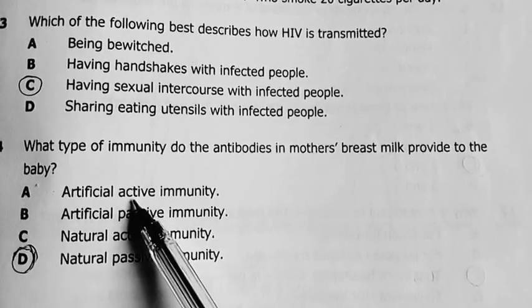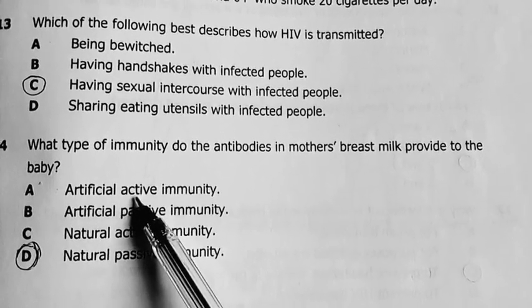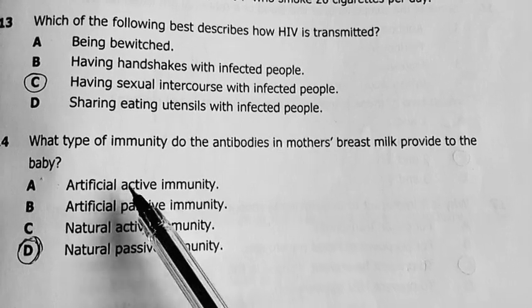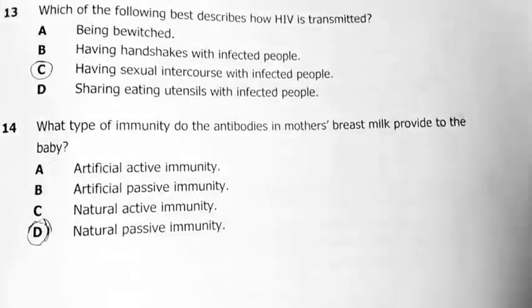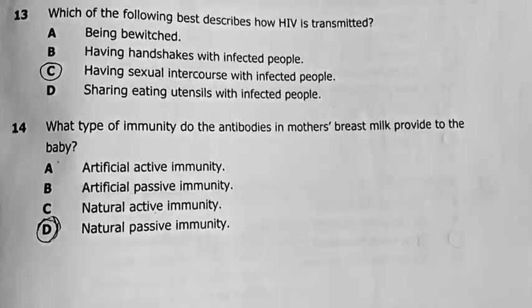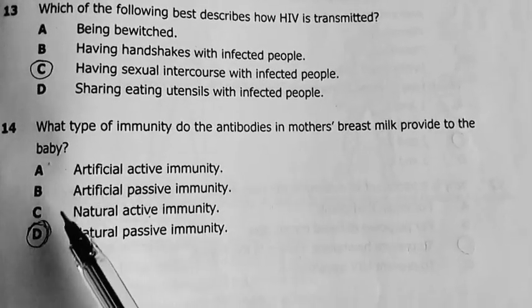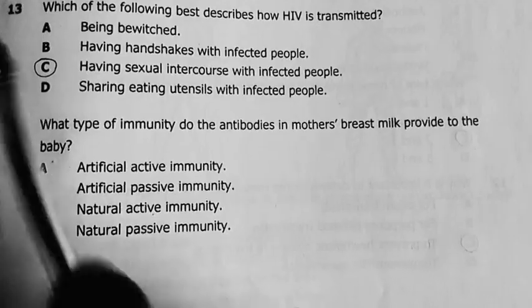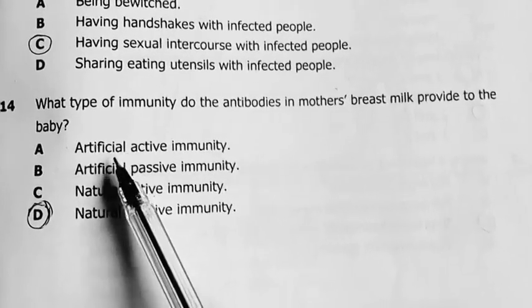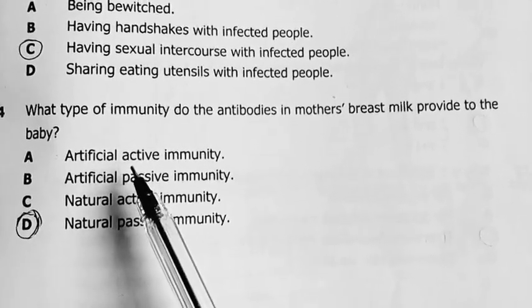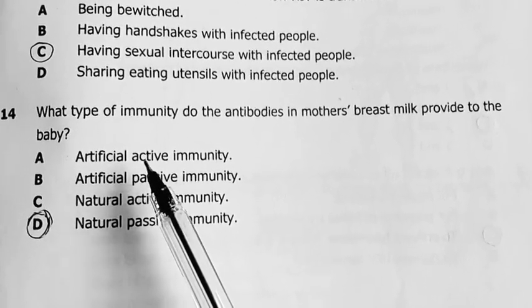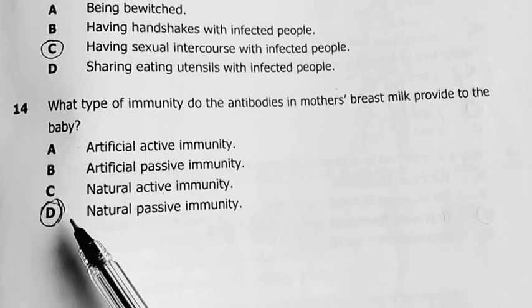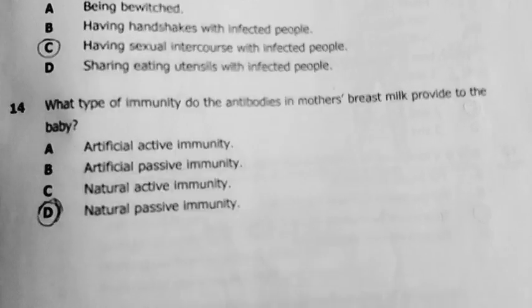Artificial active, it's induced, the whole process is brought about by human interference and then the individual gets to develop their own immunity. For example, immunization, they inject you with a dead microbe and then you develop your own antibodies as you react to that dead microbes' antigens. So the answer there is D.